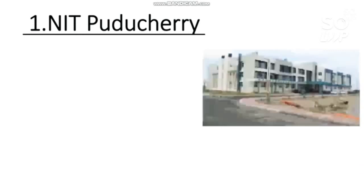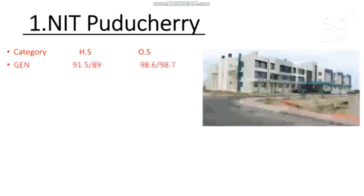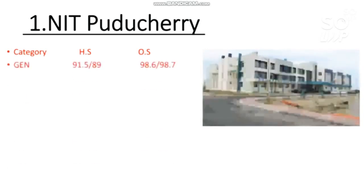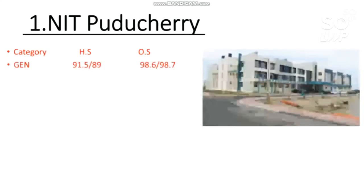Let's start the video. The first NIT is NIT Puducherry. Here is the cutoff — the percentile required for home state and other states. For General home state, 91.5 percentile is required, and for female 89 percentile. For other state students you need to score 98.6 percentile, and for female 98.7 percentile.